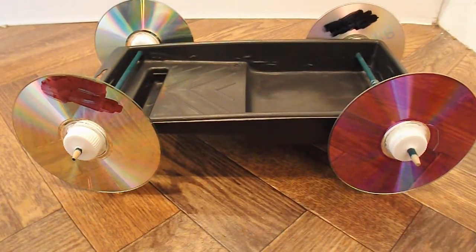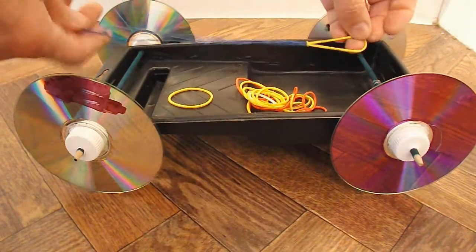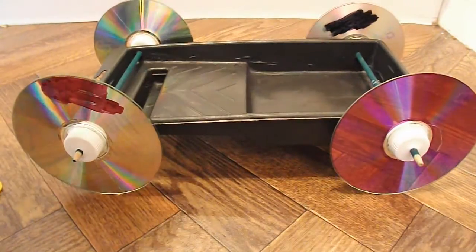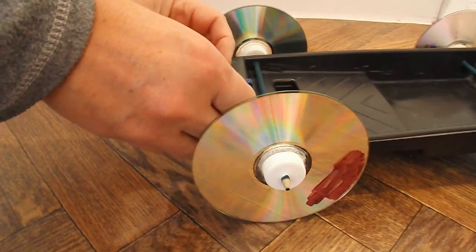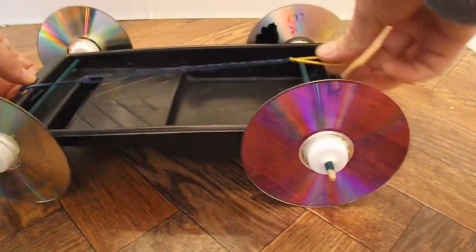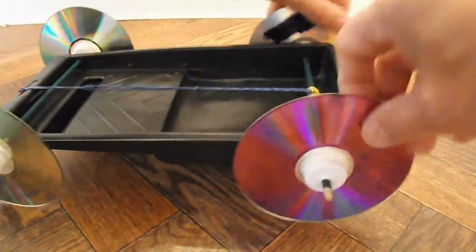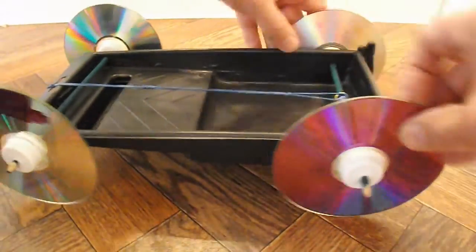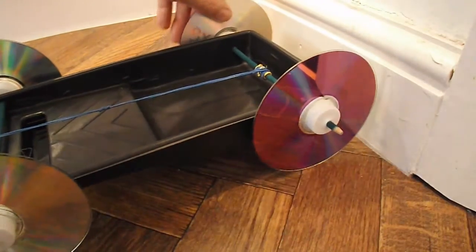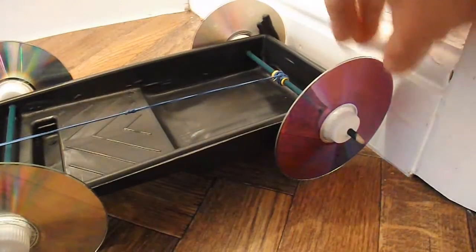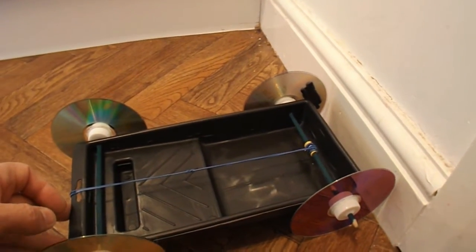Right, before we can do a test run we need some rubber bands joined together. Okay, that should be long enough. Loop it through the convenient bit at the front there. Lock it onto the back axle. Wind it up. Make sure that it's touching my wall. So I can test it for distance.